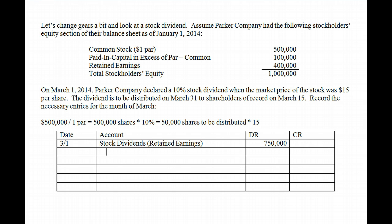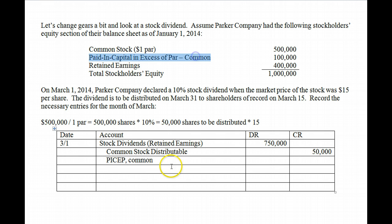The $750,000 is recorded using a Common Stock Distributable account, which holds the Common Stock until we actually hand it out. We record Common Stock Distributable at par: 50,000 shares times $1 par equals $50,000. Any difference goes into Paid-in Capital in Excess of Par — Common, which would be $700,000. Make sure your instructor allows abbreviations before using them.